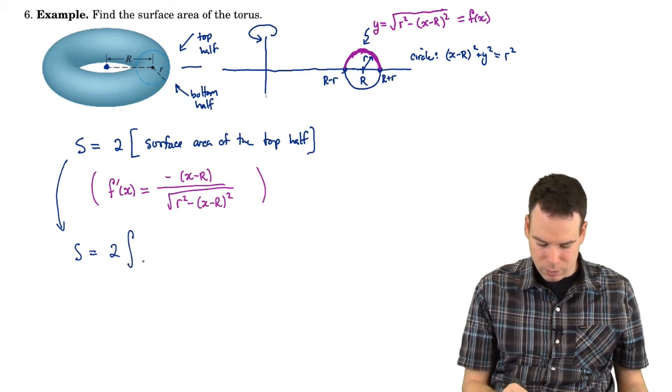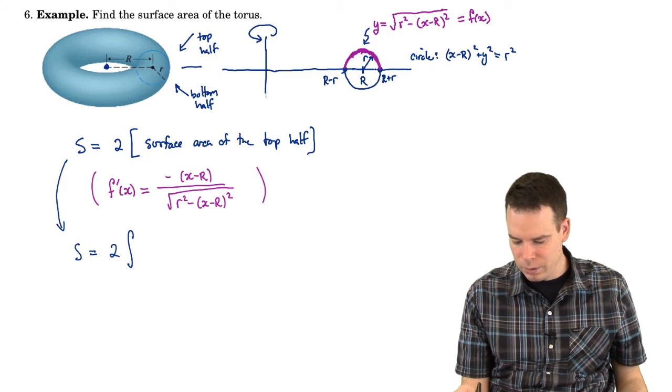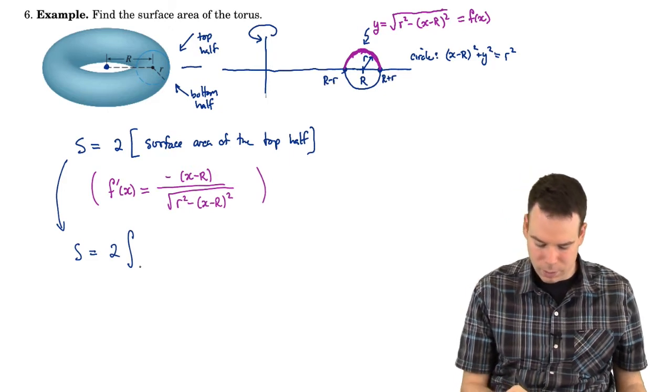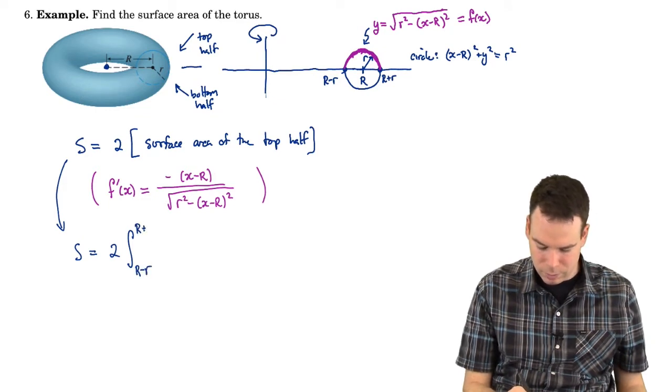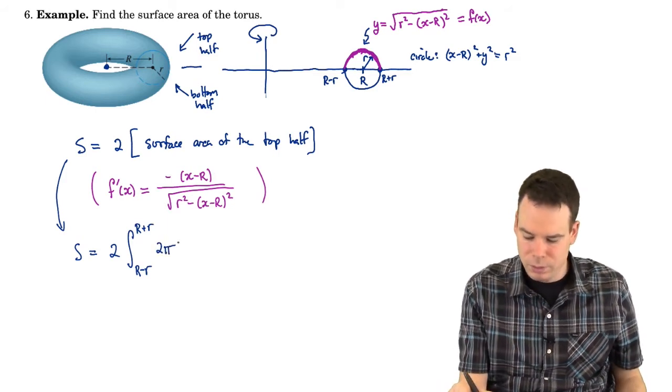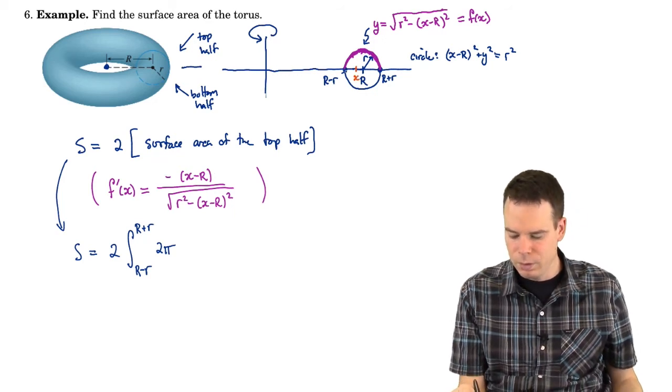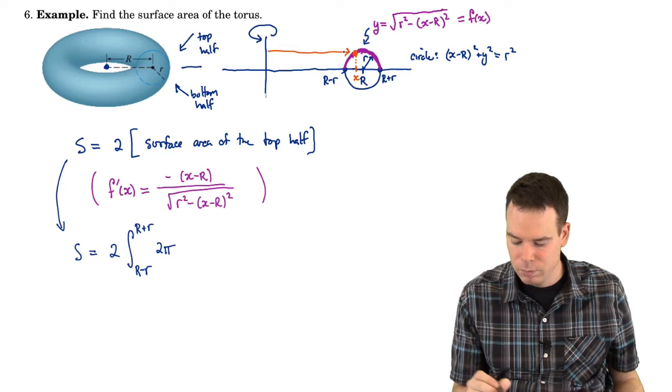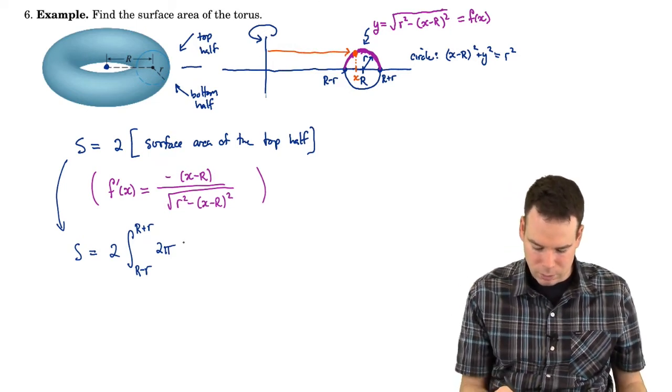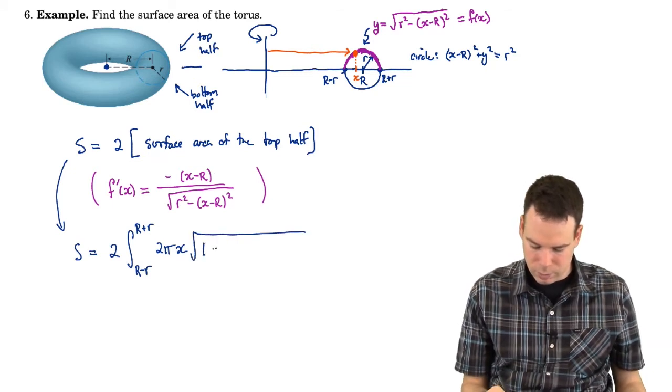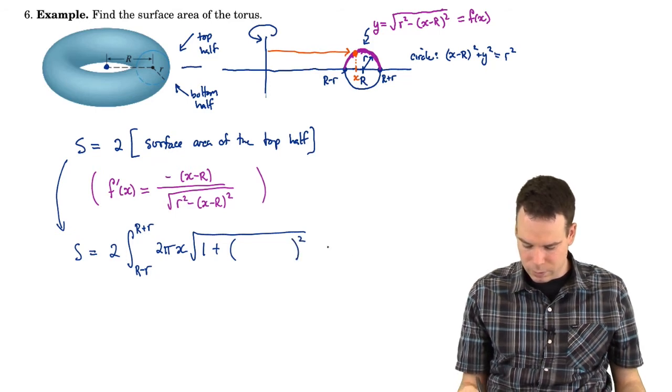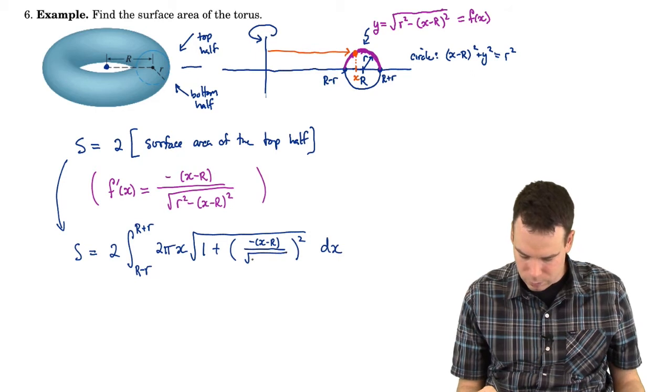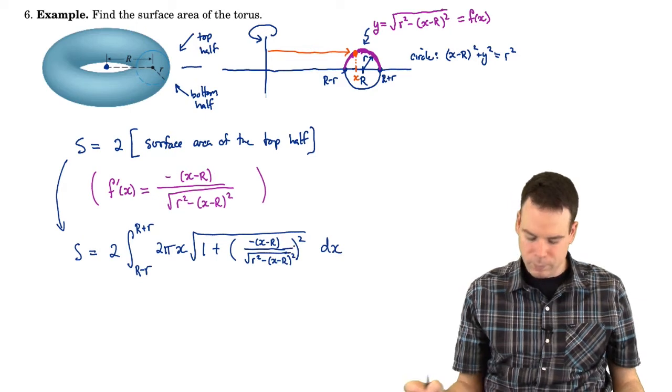So that's two times the integral from capital R minus little r to capital R plus little r. That's 2π times the radius. What's the radius in this case? Well at a given x value on the interval that we're integrating over, I go up to the curve and I say how far away is that point from the axis of rotation? Well that's going to be x units away from the axis of rotation. And then the arc length differential. So that's √(1 + (f'(x))²) dx.